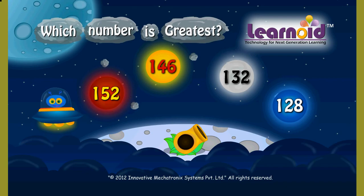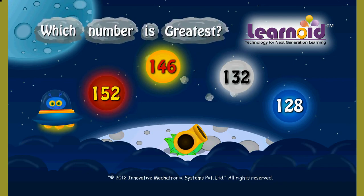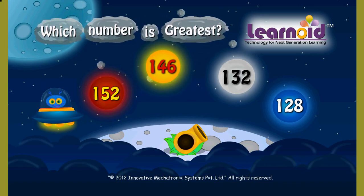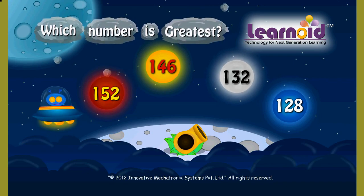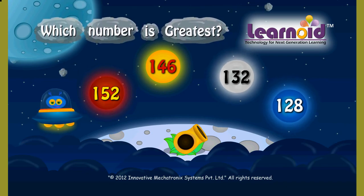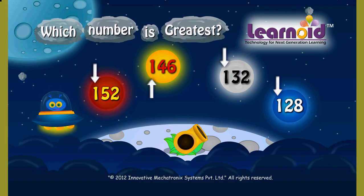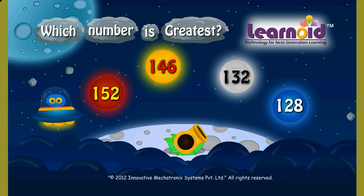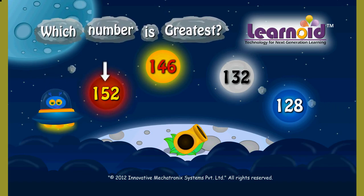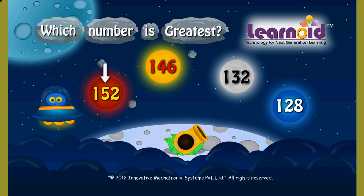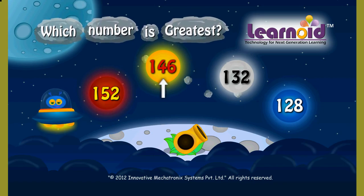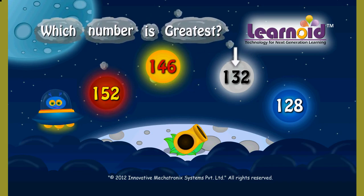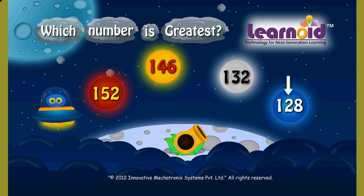Which number is greatest? 152, 146, 132 or 128? The first digit in all the numbers is the same. So let's check the second digit. It is 5 in 152, 4 in 146, 3 in 132, and 2 in 128.